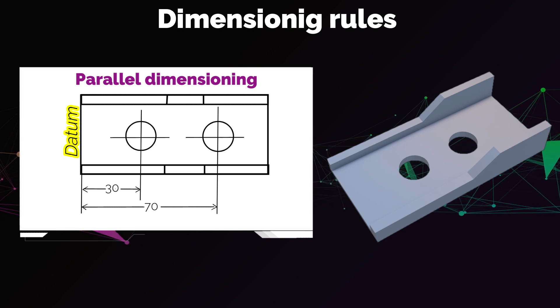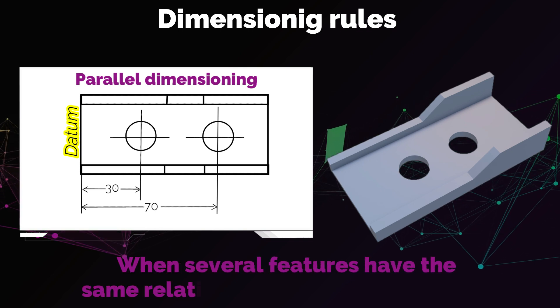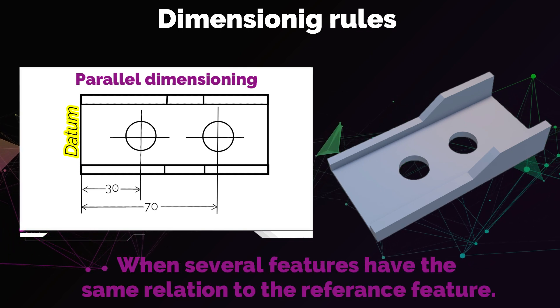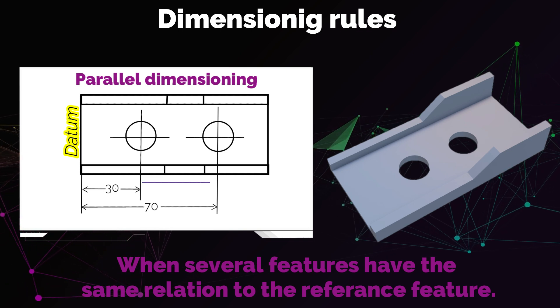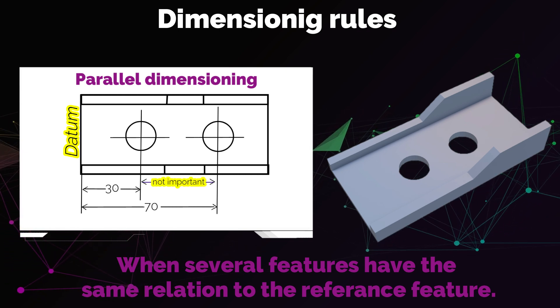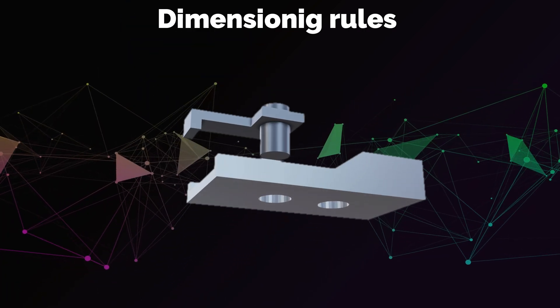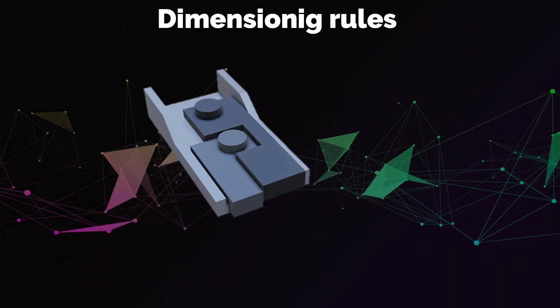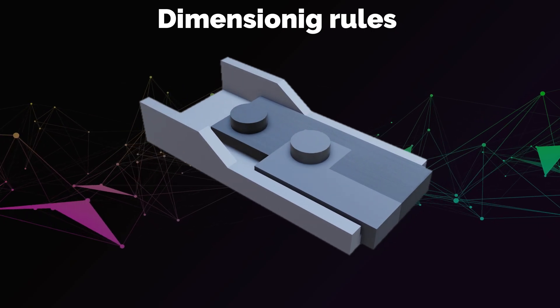This method is commonly used when several features have the same functional relation to the same reference feature. In this case, the relation of these features to each other will be of secondary importance. For example, if the shafts that are to be mounted in these holes are not connected to each other, and the distance between the two holes is of secondary importance.